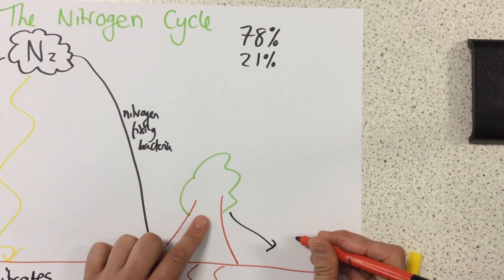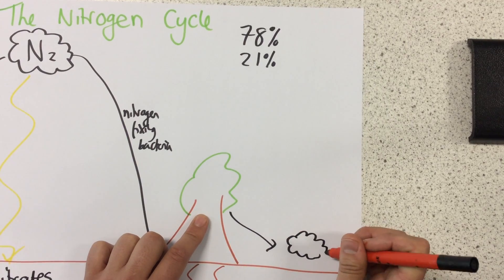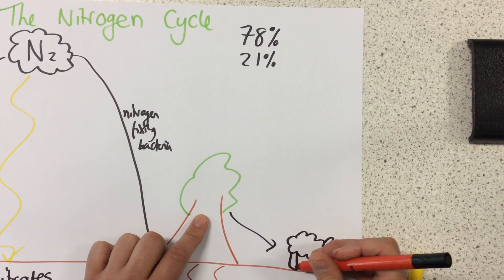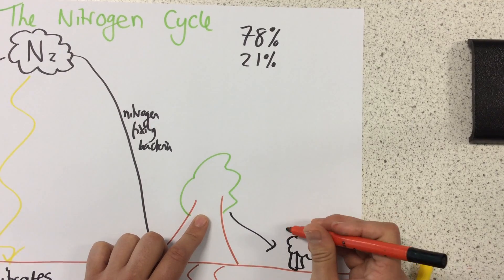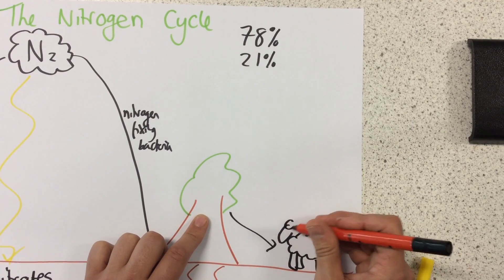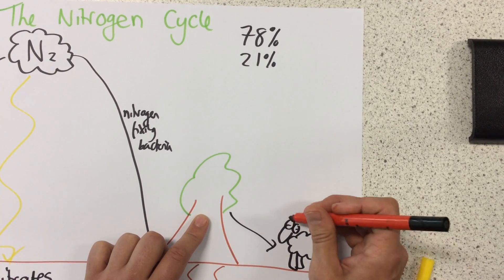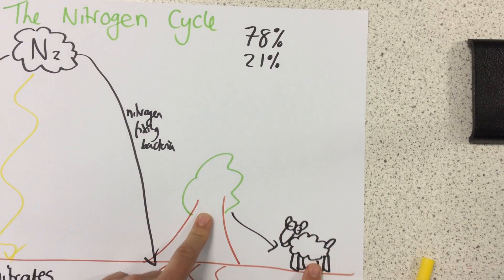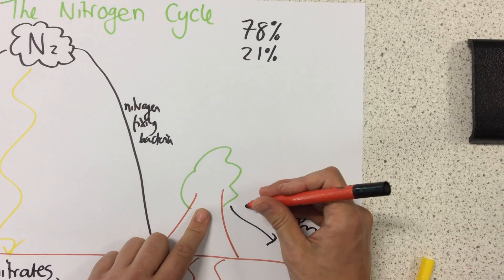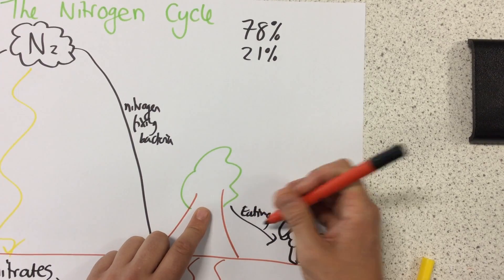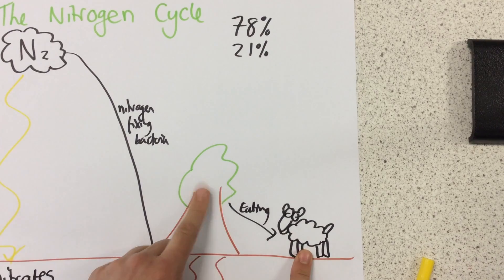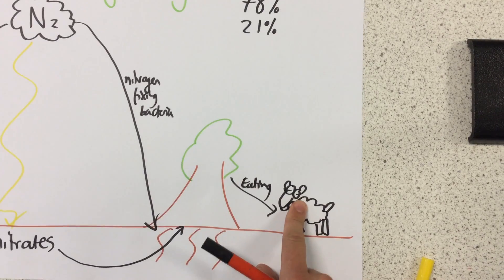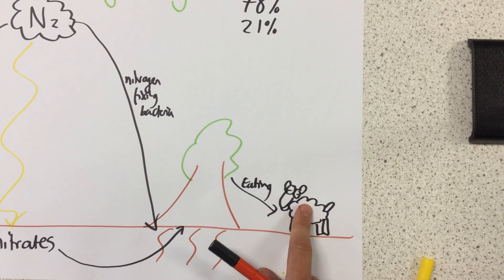I've drawn it as a tree here, but this could be any plant at all. Here is my drawing of an animal. By eating this plant, the nitrogen has been transferred from the plant into this animal.